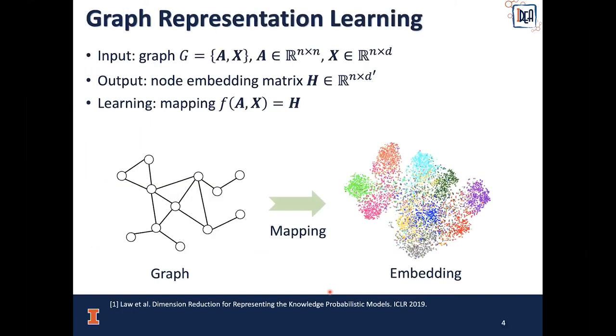In this work, we study Graph Representation Learning, where the input is a graph G, consisting of the adjacency matrix A and the feature matrix X. We output the node embedding matrix H, which is in a lower dimensional space and can be used for downstream tasks. What we want to learn is a mapping function f, which takes the input of the original graph and outputs the node embedding matrix.